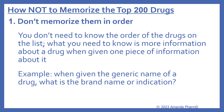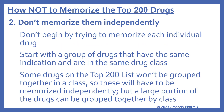Before we look at how to memorize the top 200 drugs, we'll look at how not to memorize them. Number one, don't memorize them in order. You don't need to know the order of the drugs on the list — what you need to know is more information about a drug when given one piece of information about it. For example, when given the generic name of a drug, what is the brand name or the indication? And number two, don't memorize them independently. Don't begin by trying to memorize each individual drug. The best way is to start with a group of drugs that have the same indication and are in the same drug class. Some drugs on the top 200 list won't be grouped together in a class, so these will have to be memorized independently, but a large portion of the drugs can be grouped together by class.